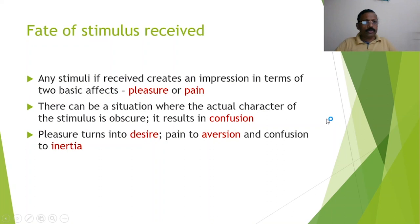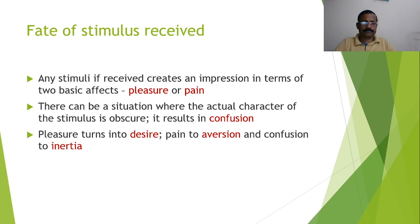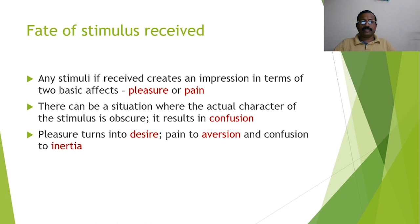Moving on to other aspects of the cognitive process: what is the fate of a stimulus received? Any stimulus, if received, creates an impression in terms of two basic effects — pleasure (sukha) and pain (dukha). Almost always we use a dichotomic method: dharma-adharma, sukha-dukha, icchha-dvesha. But there can be a situation where the actual character of a stimulus is obscure, resulting in confusion — a third option — making it a triplet.